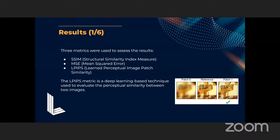Now for results. The first two metrics are structural similarity and mean square error. The LPIPS metric is a deep learning-based technique used to evaluate perceptual similarity between two images. Given a reference image in the middle, people usually say the right image looks more similar to it — even though the structural similarity and MSE metrics both indicate the left image is most similar. The LPIPS metric agrees with humans, identifying the right image as most similar to the reference.